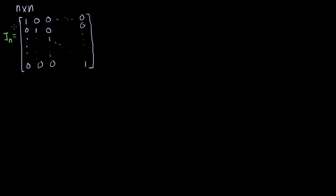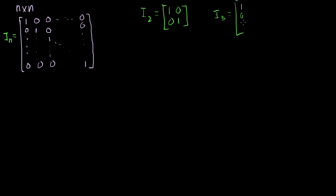I call it I sub n because it's an n by n identity matrix. I sub 2 would be equal to a 2 by 2 identity matrix — it would look like that. And I sub 3 would look like this: 1 0 0, 0 1 0, 0 0 1. I think you get the point.